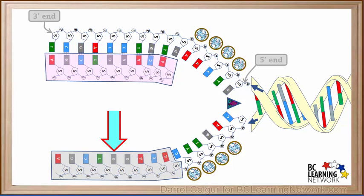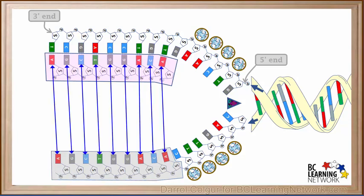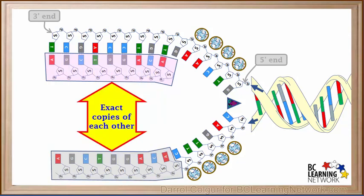Now notice this section of the lower original strand. Its bases from left to right are A, G, C, T, G, G, A, C, and A. Now we'll compare the new strand on top with the old strand on the bottom. The order of bases in the new section on top is exactly the same as the order in the old section at the bottom. The new strand is an exact copy of the old strand.